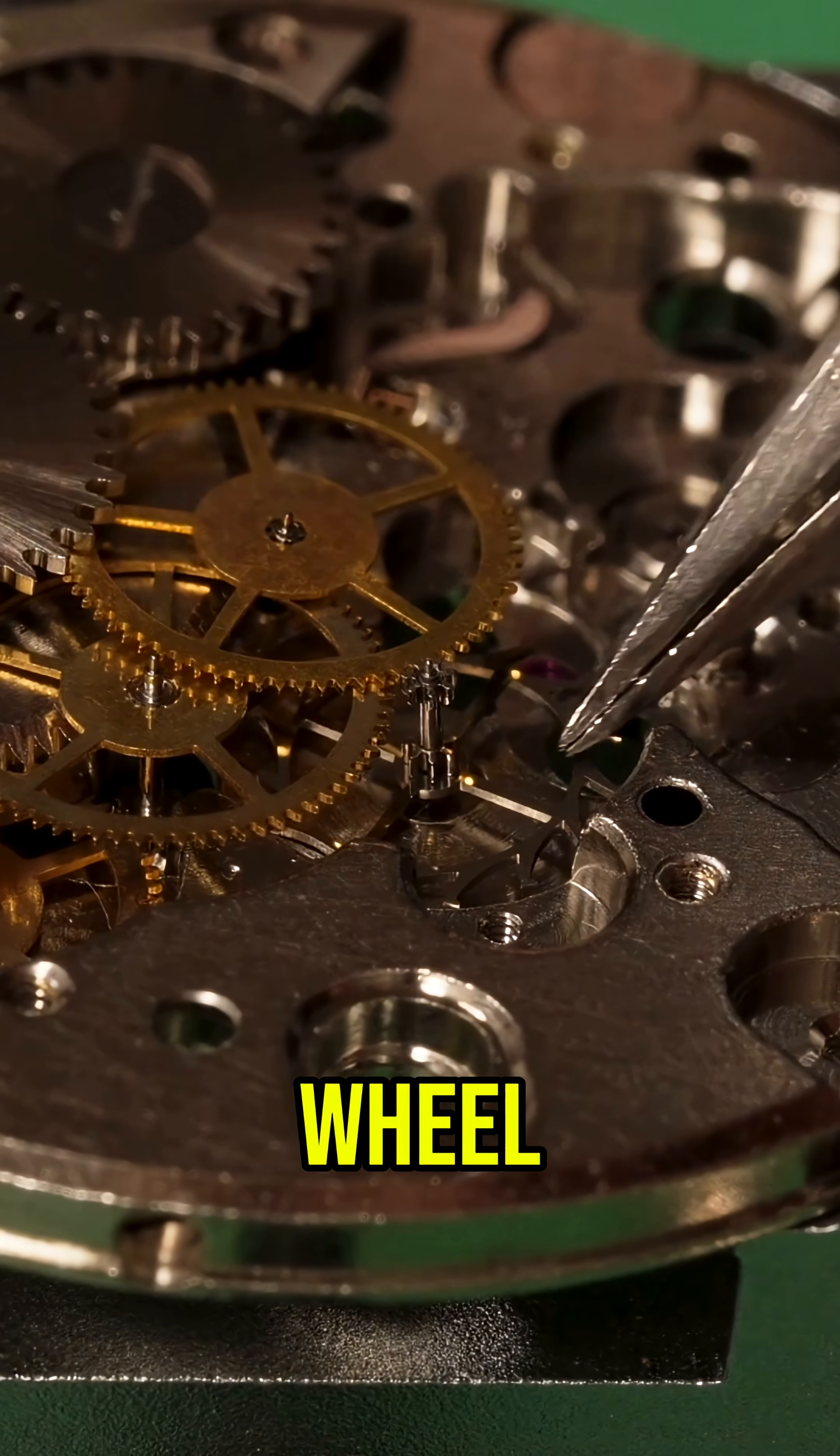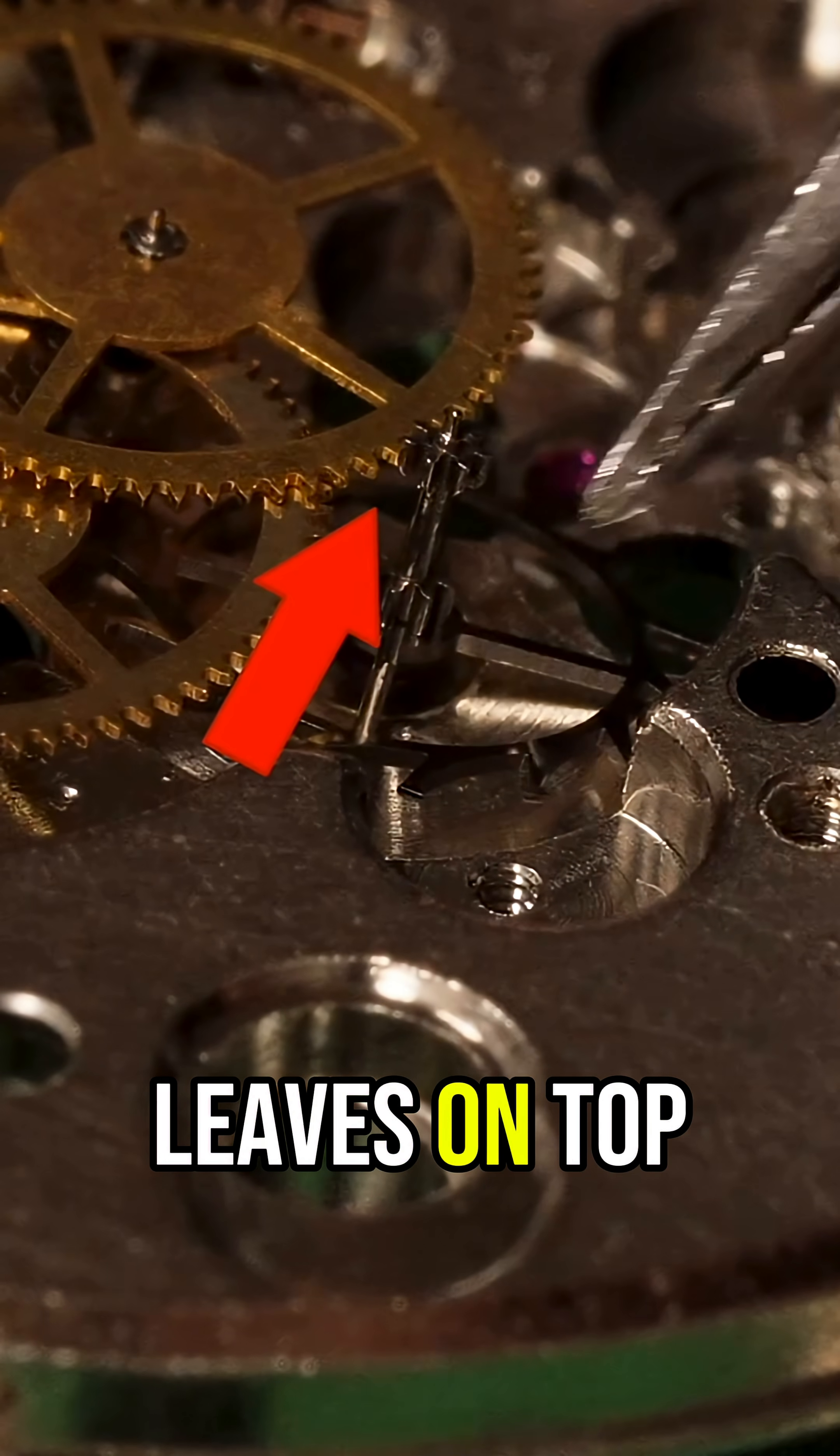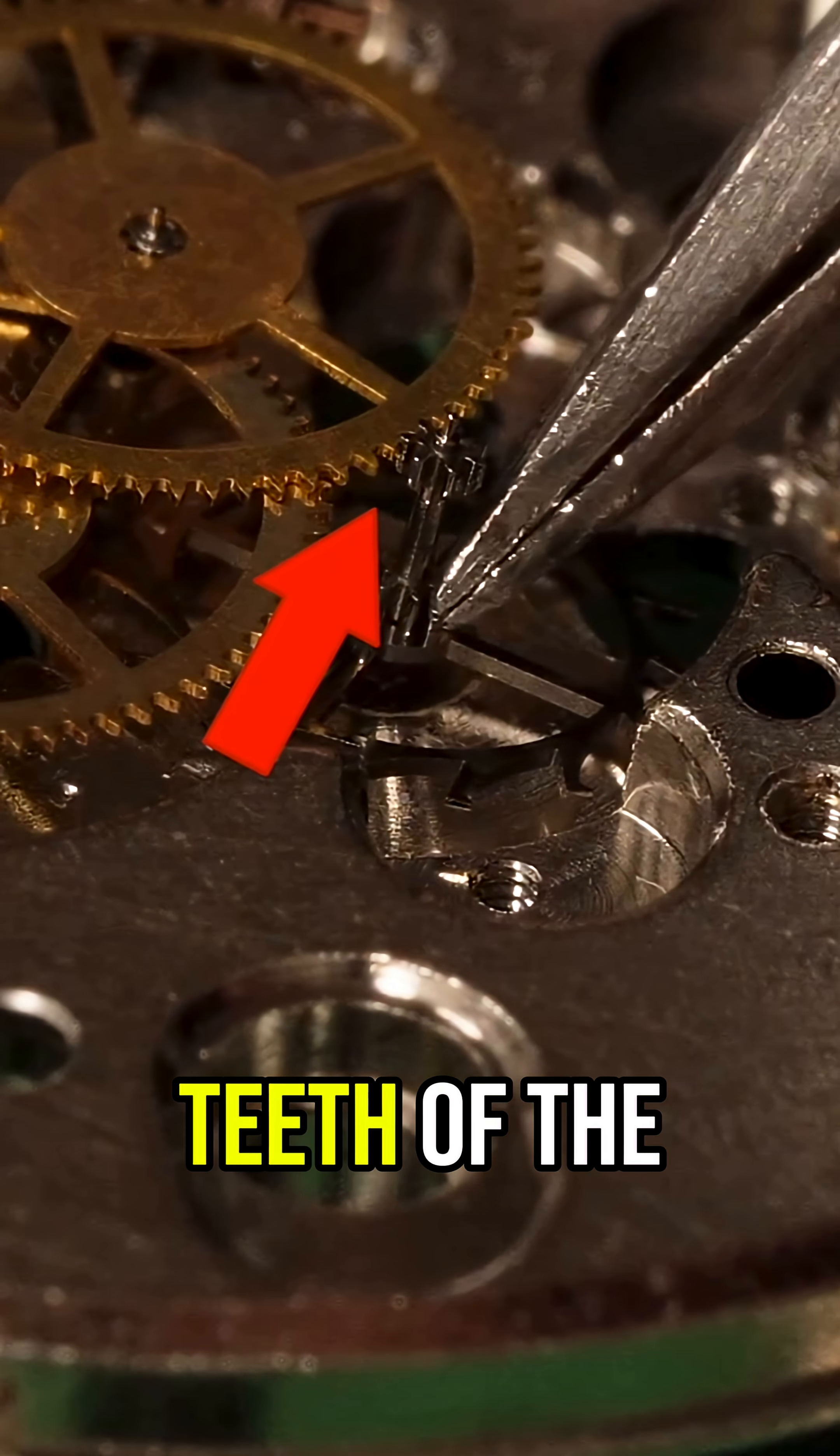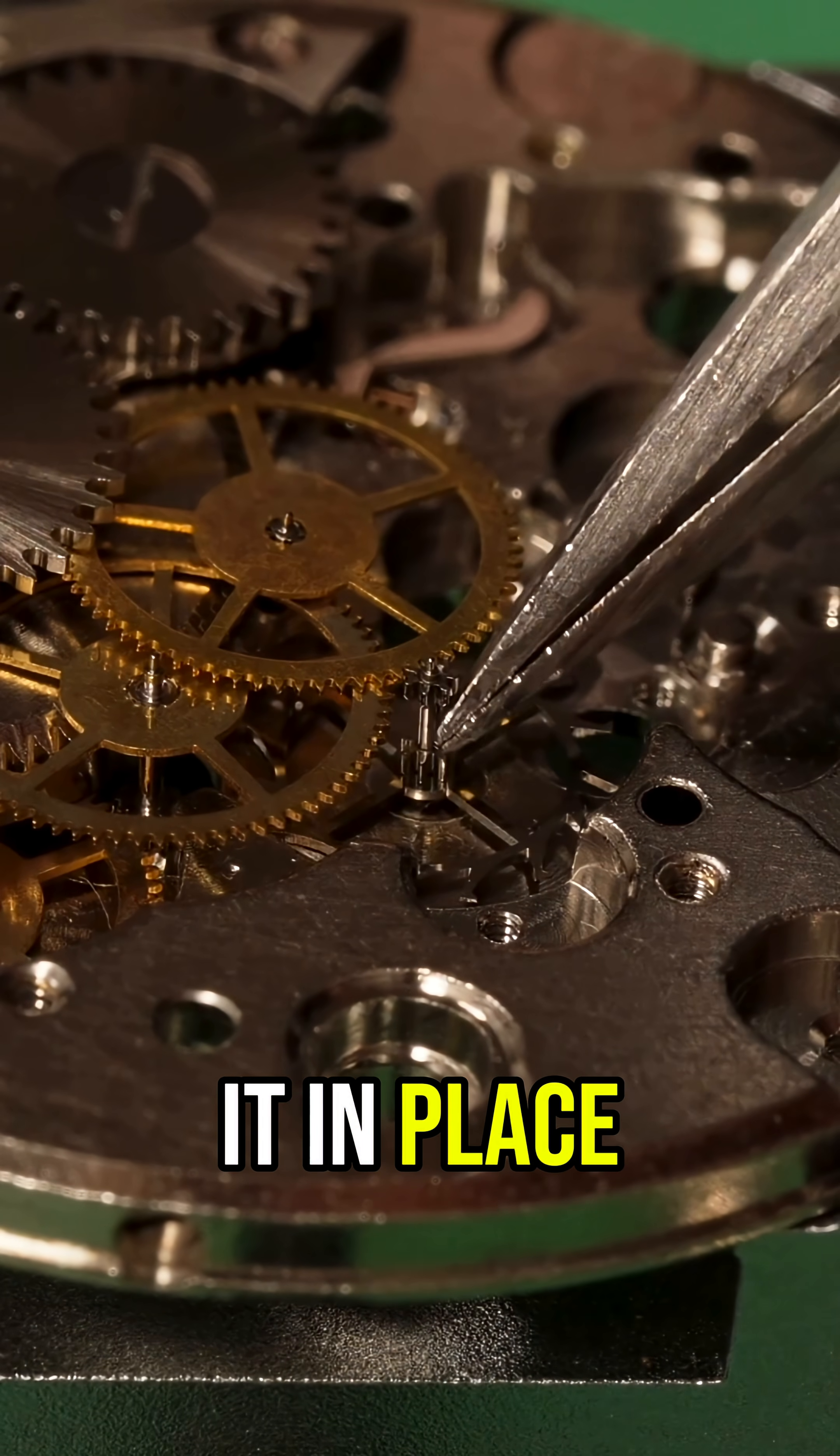The last wheel is the escape wheel and you can see how the leaves on top of the pinion mesh with the teeth of the sweep second wheel once we put it in place.